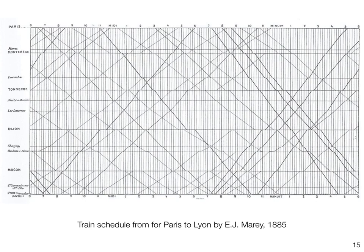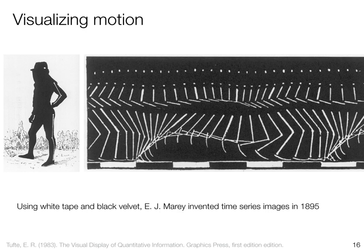Meret was quite interested in movement. He also did some experiments observing how people move when they're running or walking, as well as animals and horses. With that, he actually invented time series images by doing a superimposition of multiple photographs taken in a series, using white tape attached to the person.